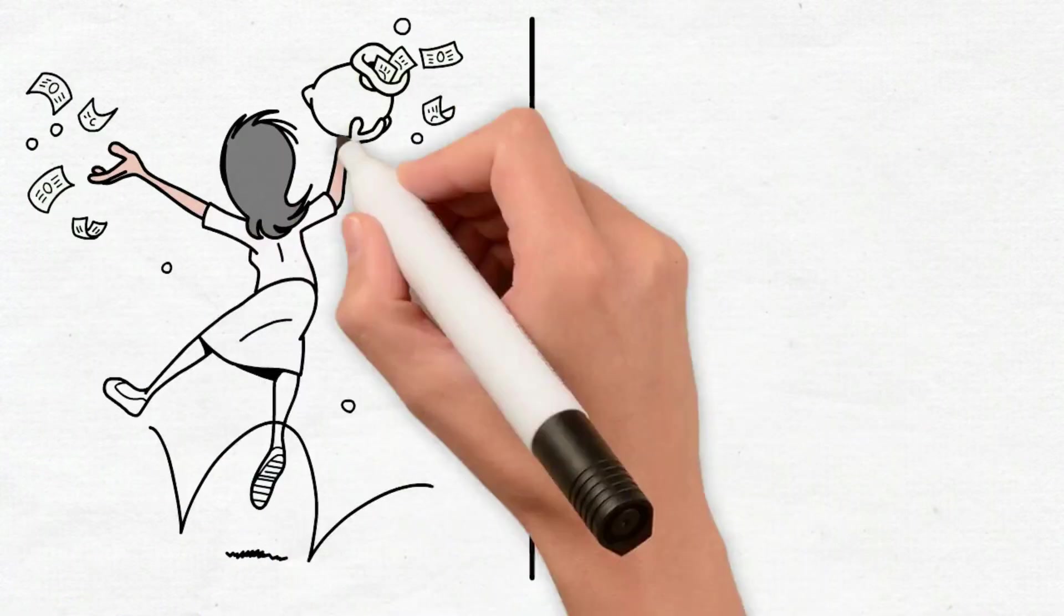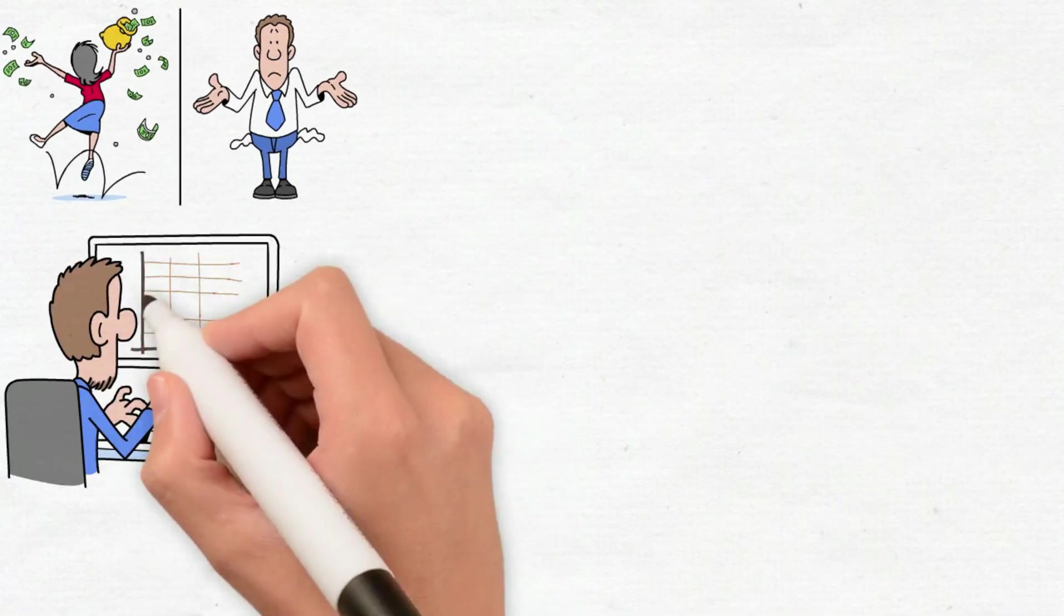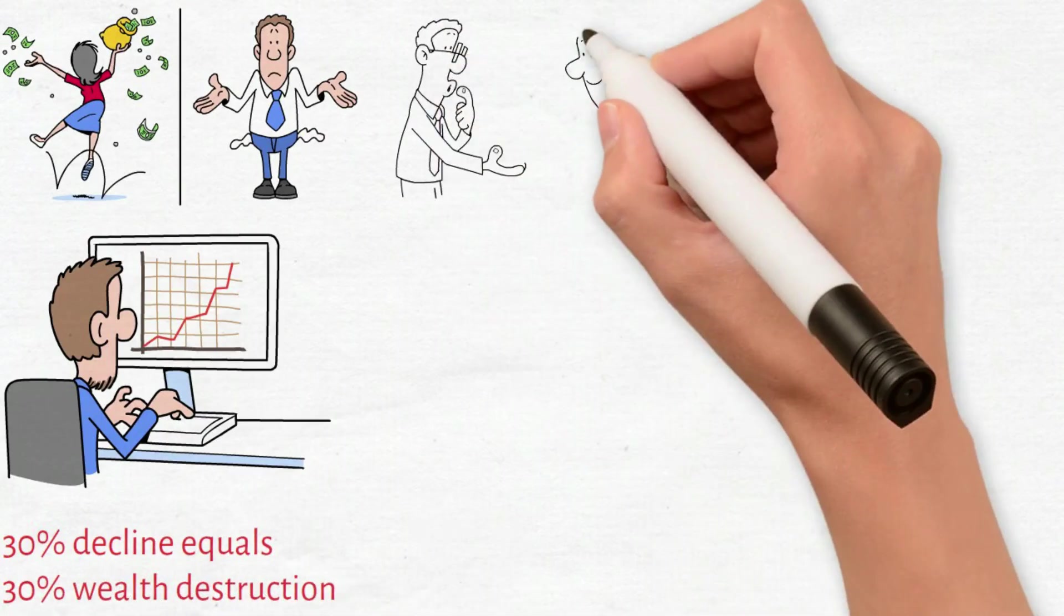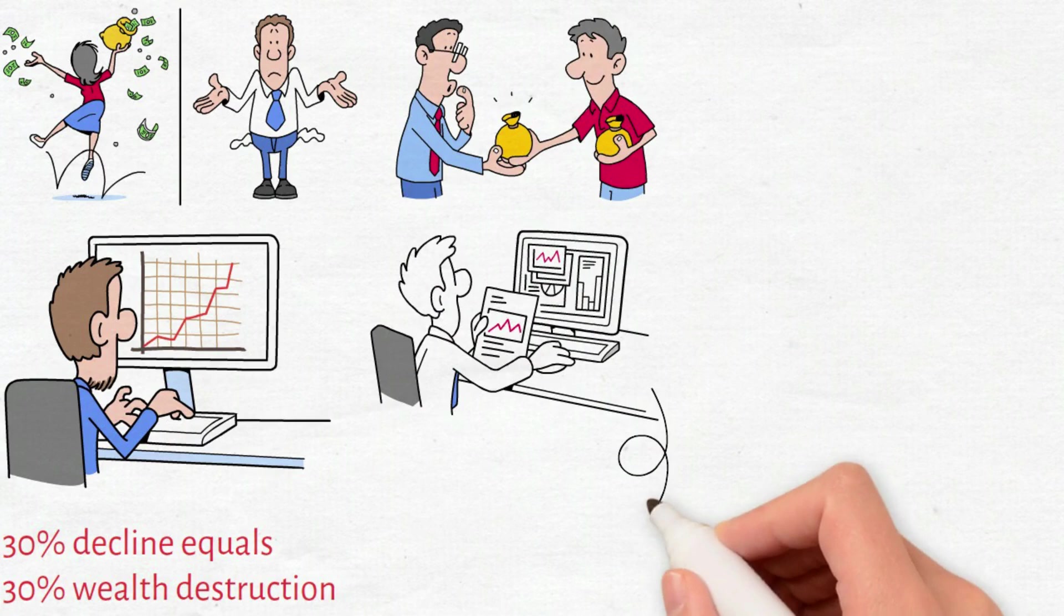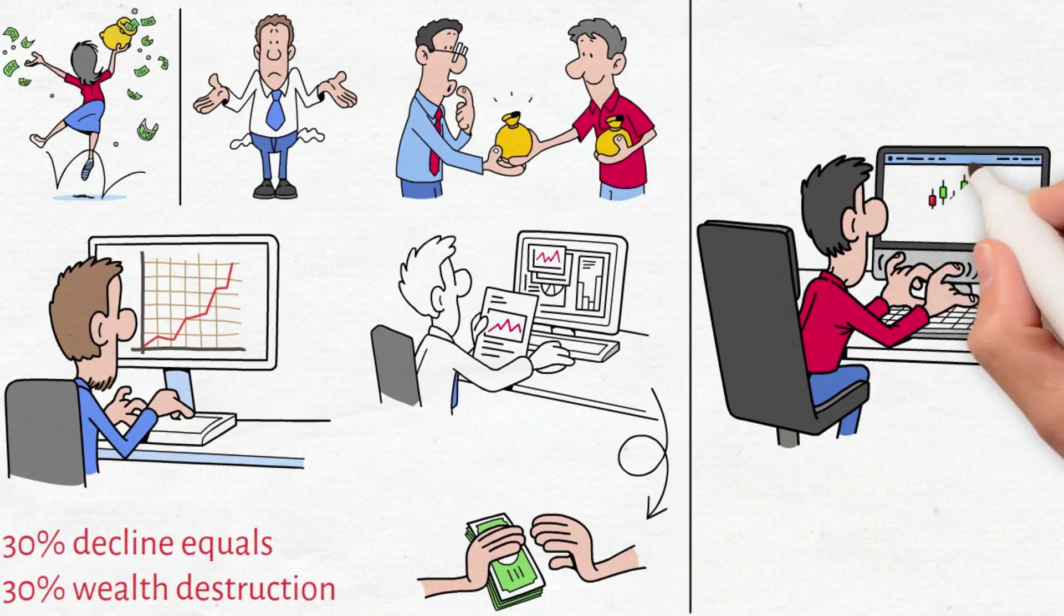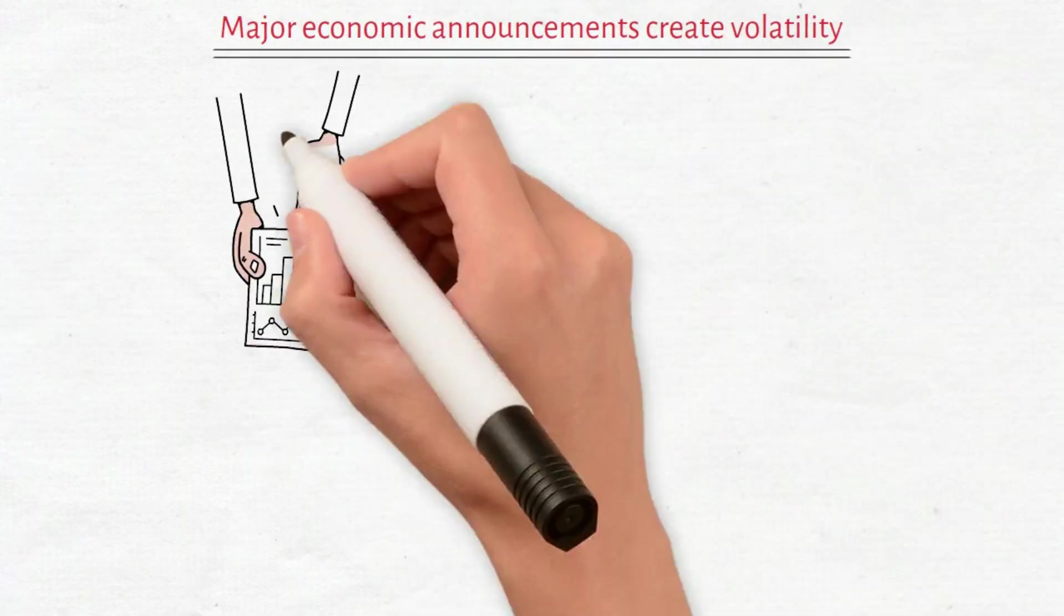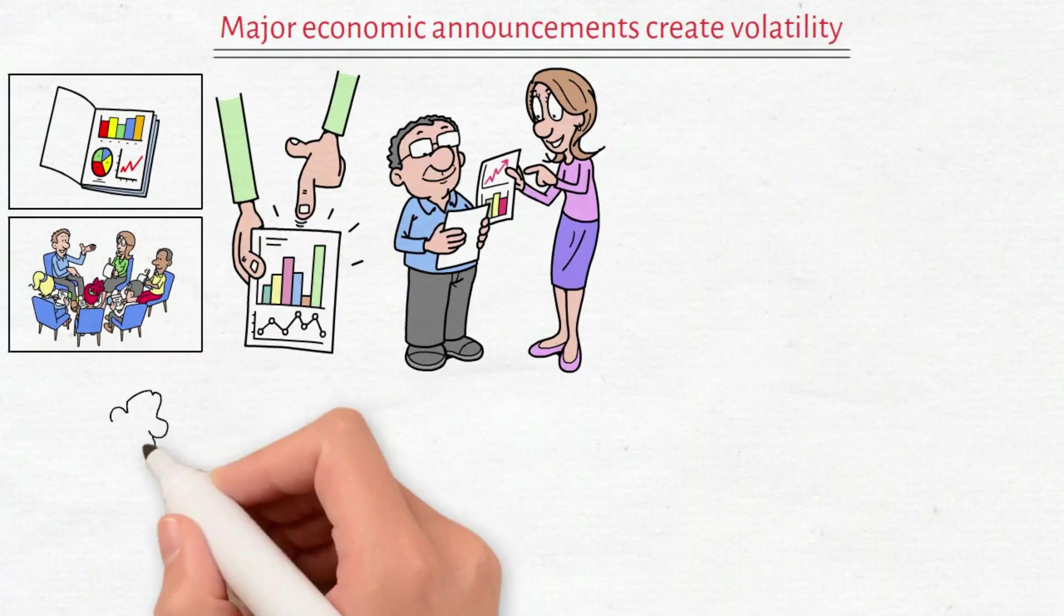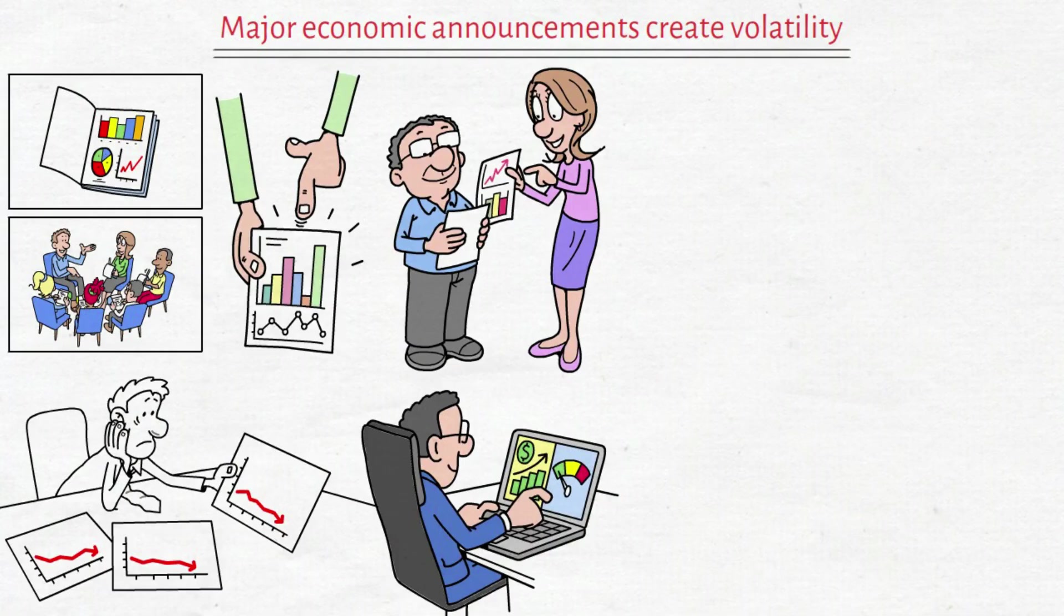The dividing line between winners and losers in the next crash comes down to this fundamental difference. Tech holders require rising prices. A 30% decline equals 30% wealth destruction. Income growth investors receive payment regardless of price action. Lower valuations mean payouts acquire more shares. Those shares produce income perpetually. You're literally purchasing eternal cash flow streams during sales. Major economic announcements create volatility: inflation reports, employment statistics, central bank meetings, corporate earnings releases. Each event triggers market turbulence. Each turbulent moment disguises itself as crisis but reveals itself as opportunity.